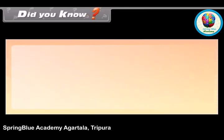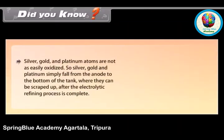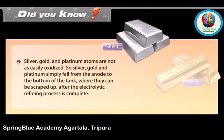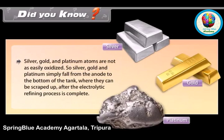Did you know? Silver, gold, and platinum atoms are not easily oxidized. So silver, gold, and platinum simply fall from the anode to the bottom of the tank where they can be scraped up after the electrolytic refining process is complete.